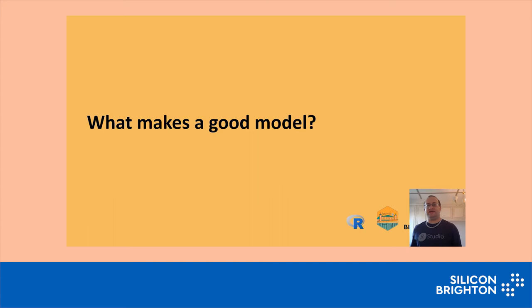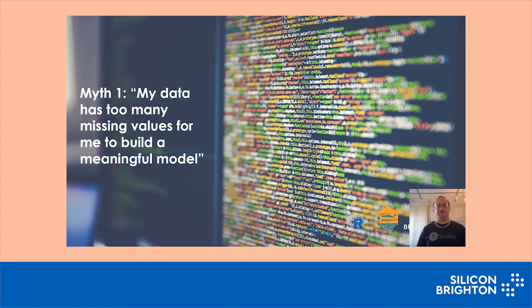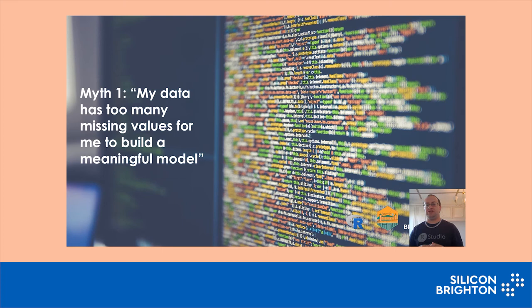What makes a good machine learning model? Let's quash some of the myths. First myth: 'I couldn't possibly build a model because I've got a lot of blanks in my data.' With old-school statistical models, you really need complete data sets for the model to build and predict effectively. With machine learning, it can handle blanks within the data. Imagine a row of data with 10 attributes but two of them are missing — a machine learning model would use the other eight to make the prediction and just ignore the two missing values. Machine learning can handle some blanks in data, so don't be afraid to try machine learning techniques if your data is a little bit gappy.